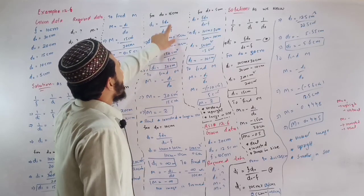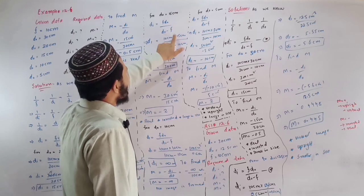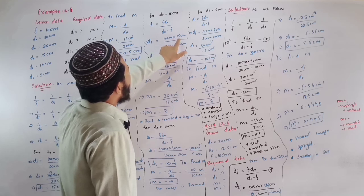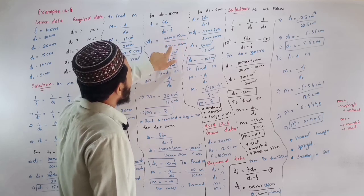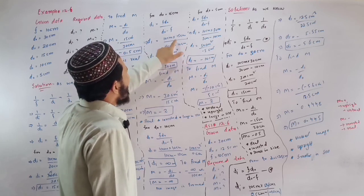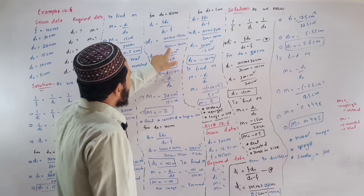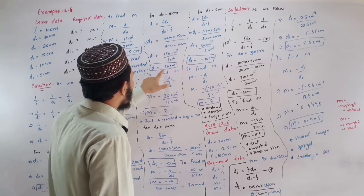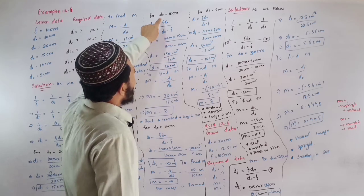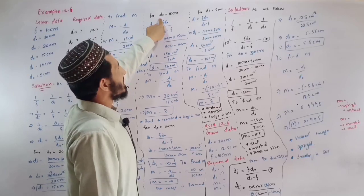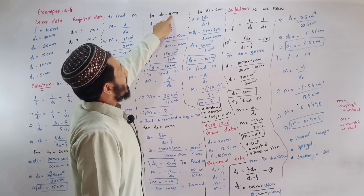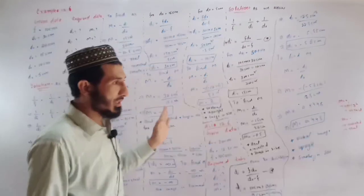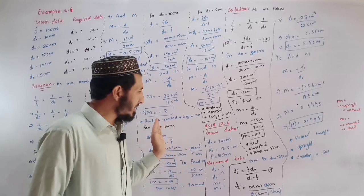With d0 of 15 cm, di equals f times d0 divided by d0 minus f. F is 10 cm, d0 is 15 cm minus 10 cm. 5 cm. So di is 30 cm. The image distance, the object distance, the optical center.